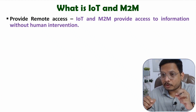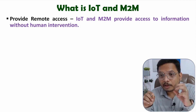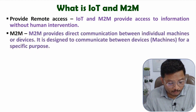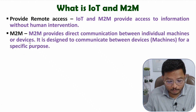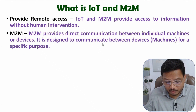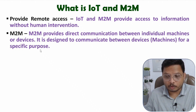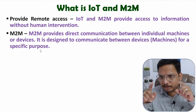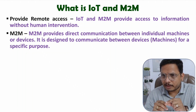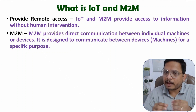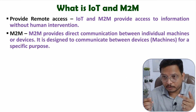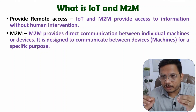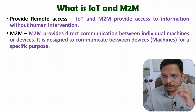First, I will explain the basic meaning of an M2M network. When it comes to M2M networks, they provide direct communication between individual machines or devices. These are designed for devices to communicate with each other for a specific purpose. So in M2M, the purpose is specific, the network will be limited, and the application will also be specific. You can say that this is why it is proprietary work.